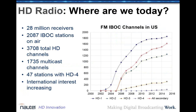So, where are we today? HD Radio currently has about 28 million receivers in the marketplace — by far the most successful digital radio implementation around the world. In total, there are 2,087 HD Radio stations on the air and a total of 3,708 channels, of which 1,735 are multicast channels. There are even 47 channels running HD4. Most stations have HD2, and then a declining number have HD3 and HD4. The secondary stations — those you can only hear with an HD radio — number over 1,600 in the United States alone.